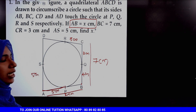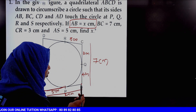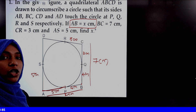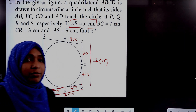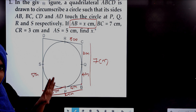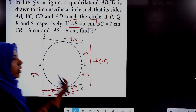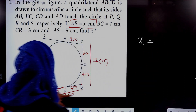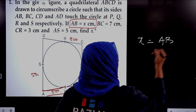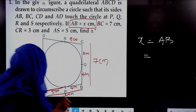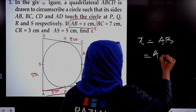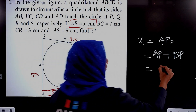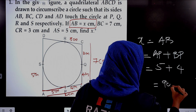B is an external point to the same circle, and the tangents are BQ and BP, so BQ equals BP because they are equal tangents drawn from the same external point B to the same circle — so BP equals 4 cm. Now x equals AB equals AP plus BP, which equals 5 plus 4, which is equal to 9 cm.